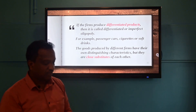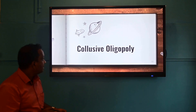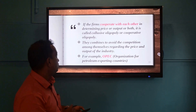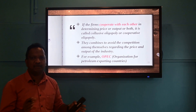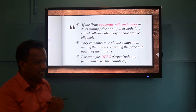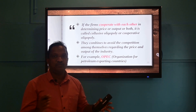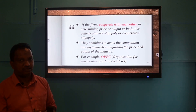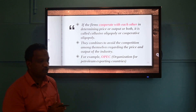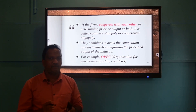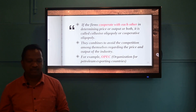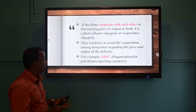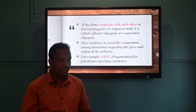Collusive oligopoly means it is an oligopoly market situation where firms cooperate with each other. This is the key characteristic of collusive oligopoly. There will be no competition among themselves; everything will be determined on the basis of mutual understanding or mutual discussions.